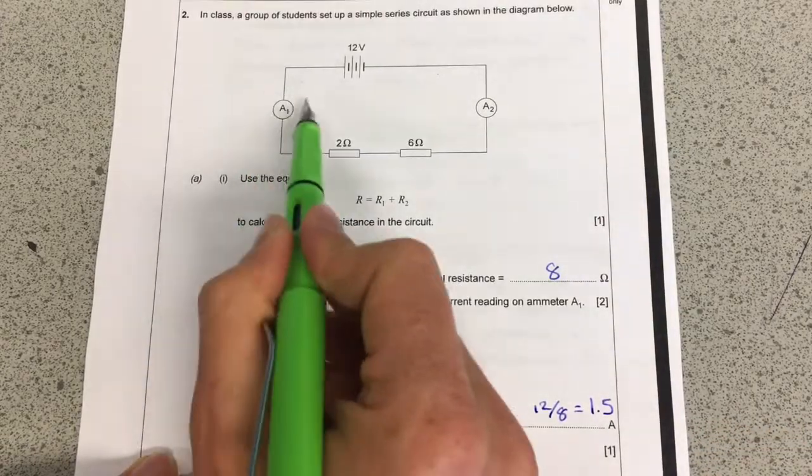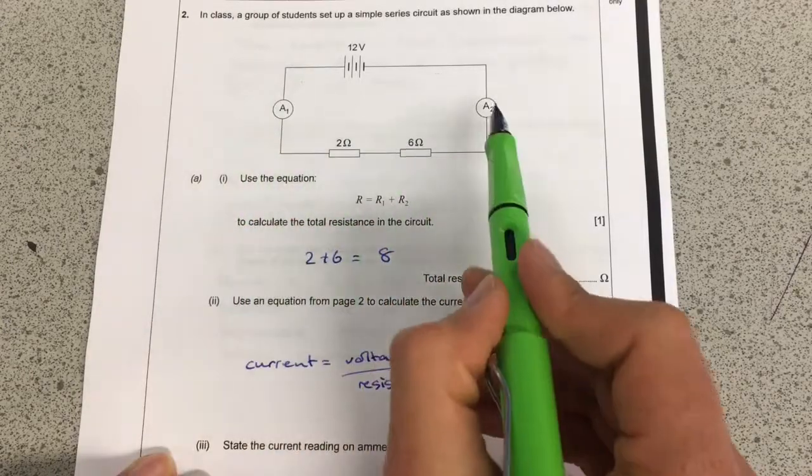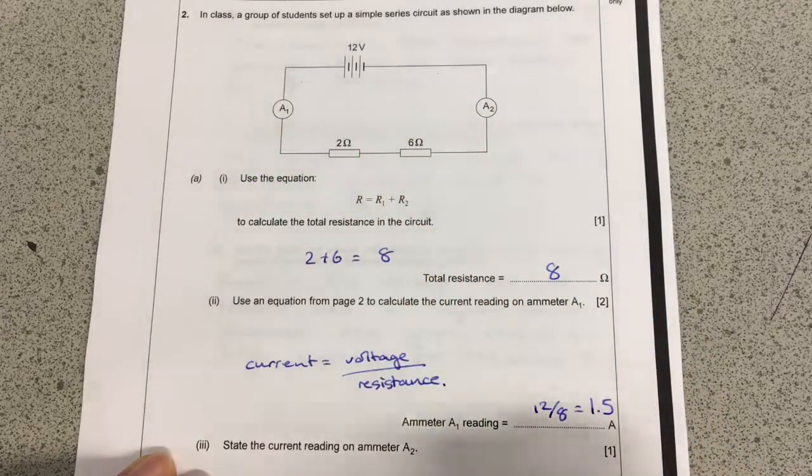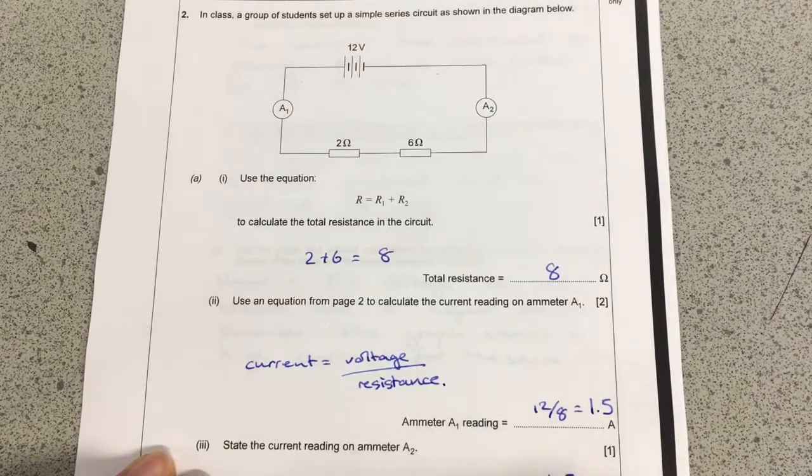Now that's the current through that ammeter, the current through the other side will be exactly the same because it's going to go the same through both. So that's just 1.5 down there as well.